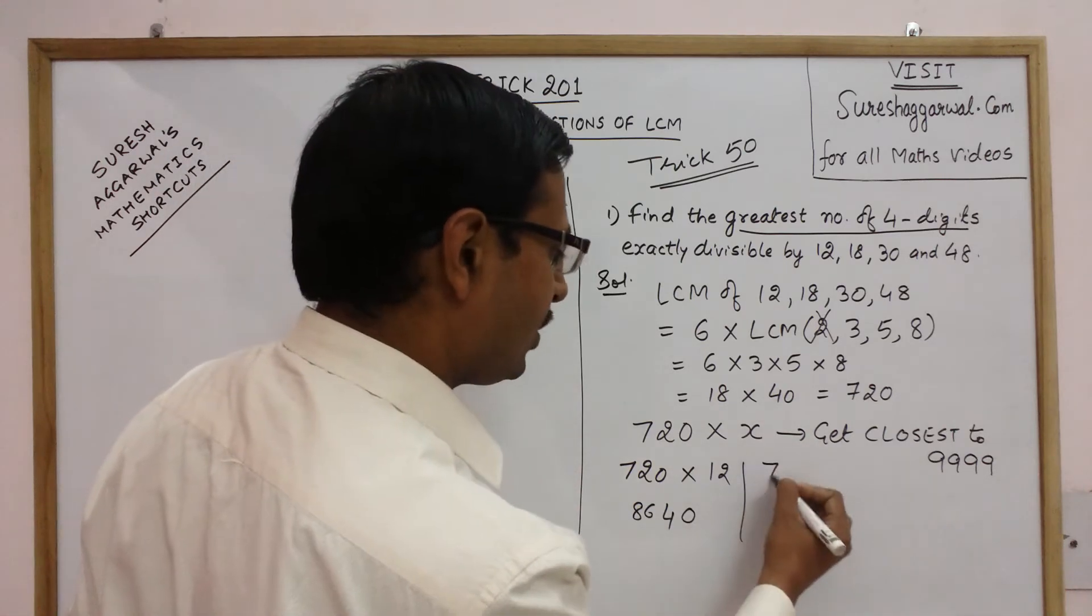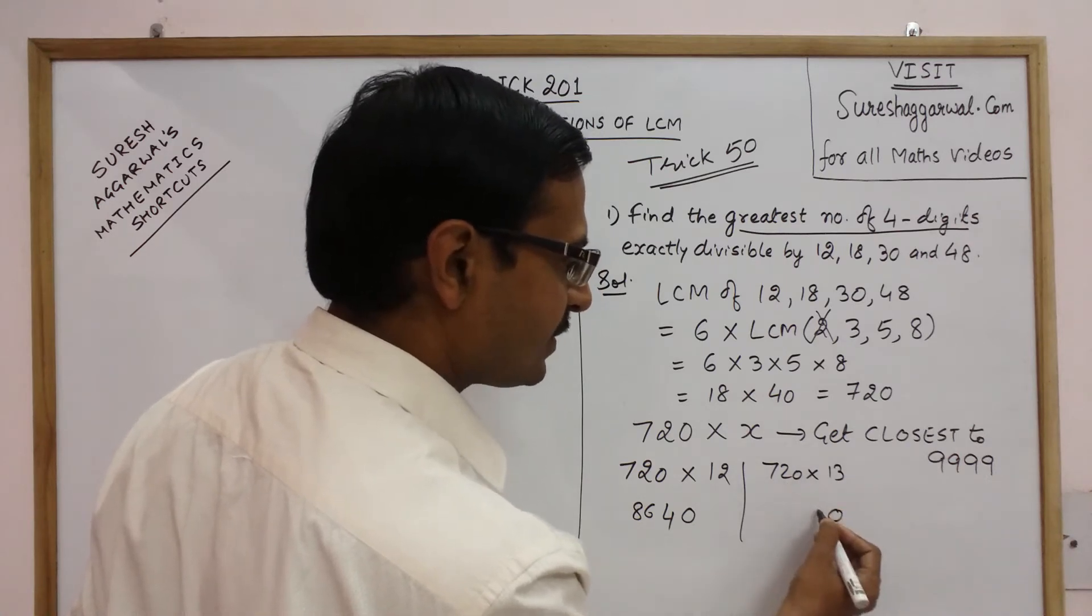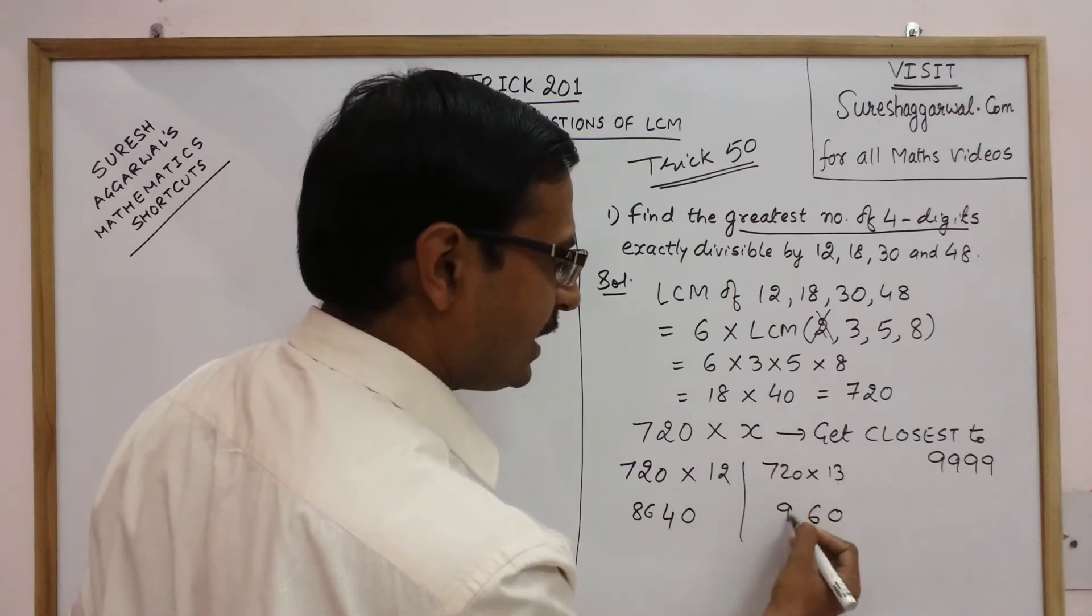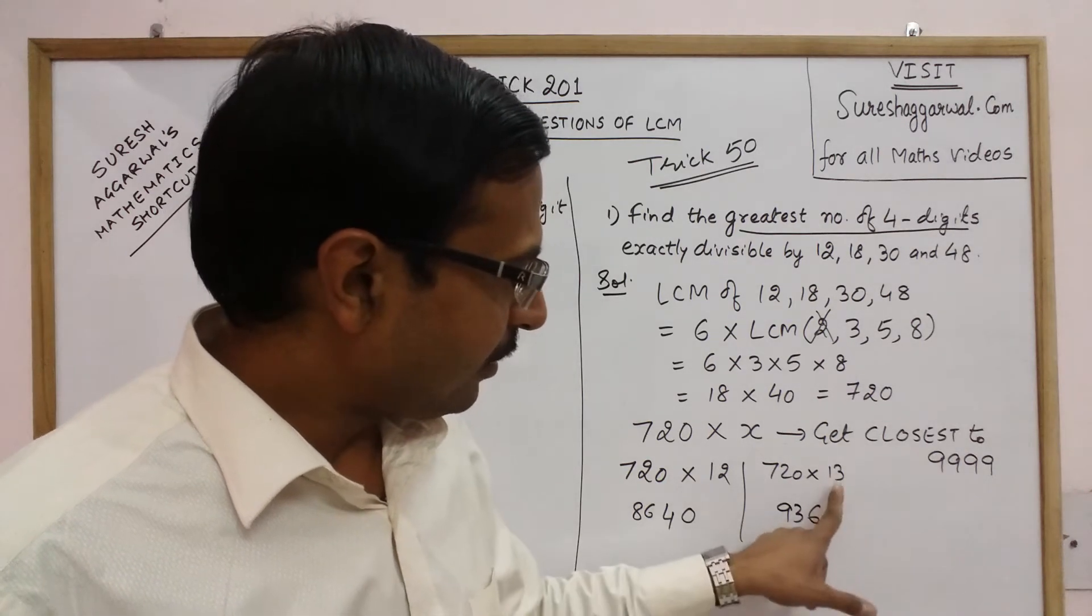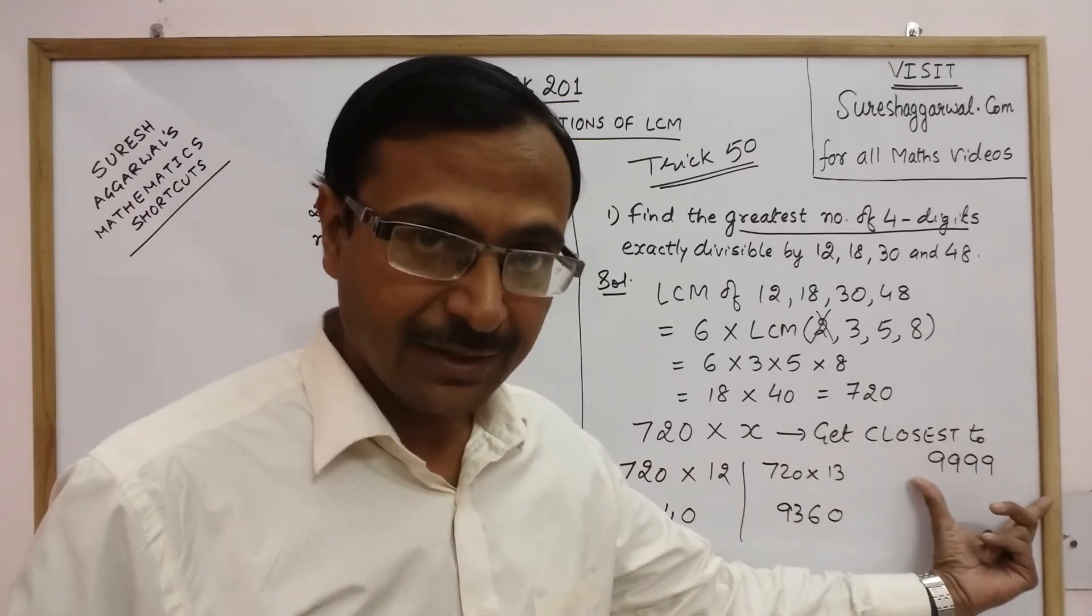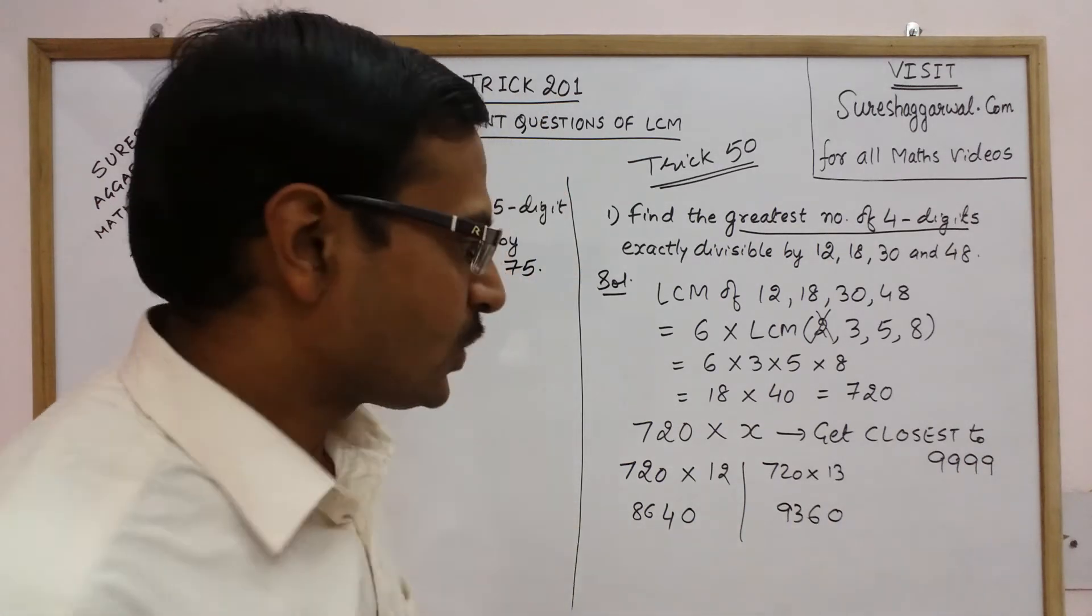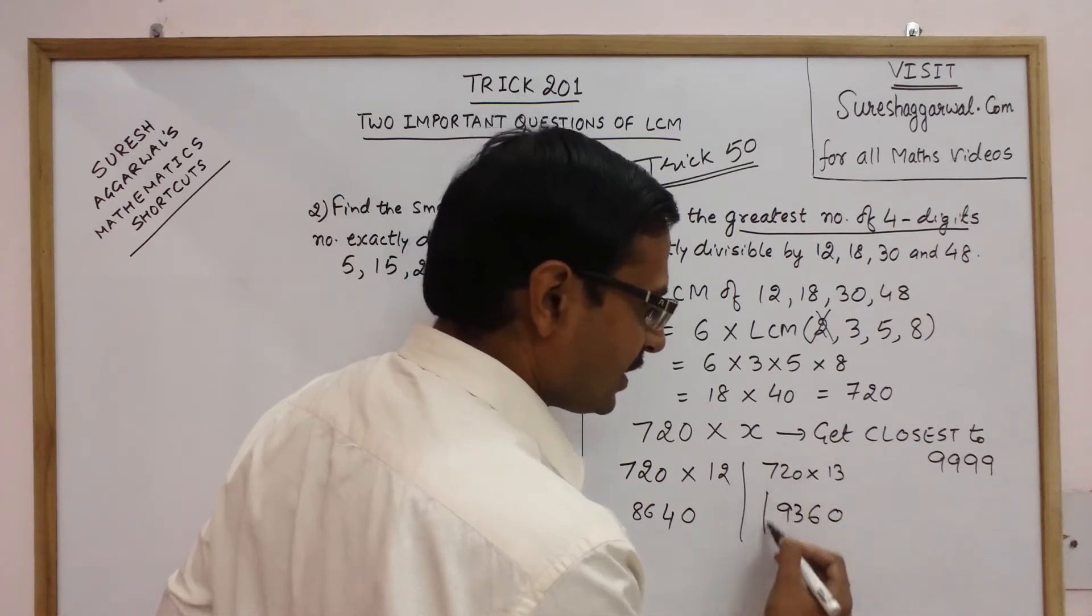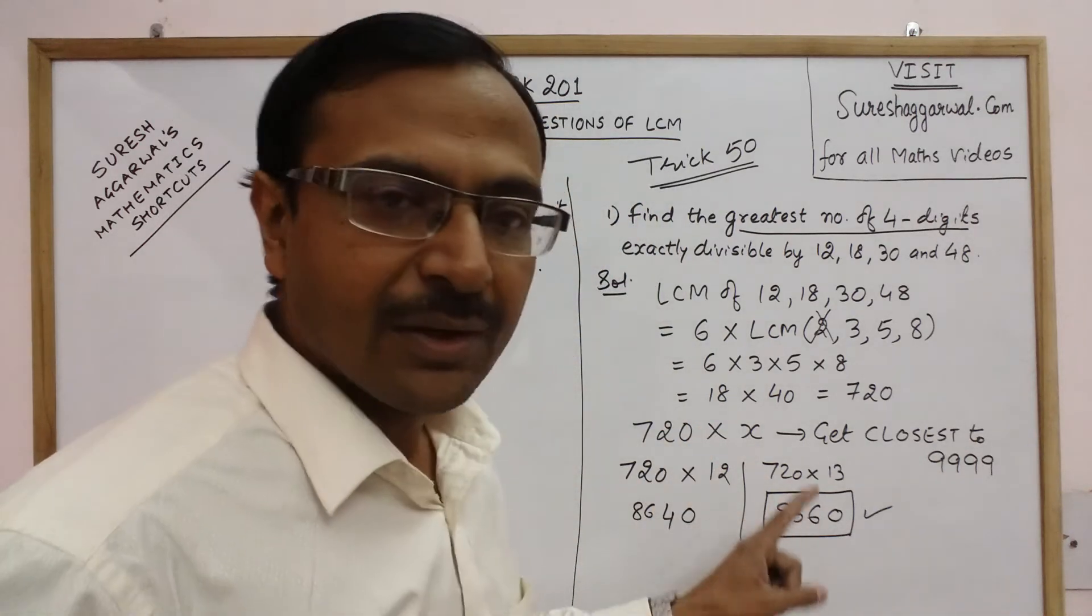So I will try with 720 into 13. So 13 into 2 is 26. So 2 carry, 13×7 is 91 plus 2 is 93. Now see 9360. And if I take this product with 14 then I will cross 9999. So I just needed to get closest to 9999. So the closest multiple of 720 is 9360 and this gives you the final answer.